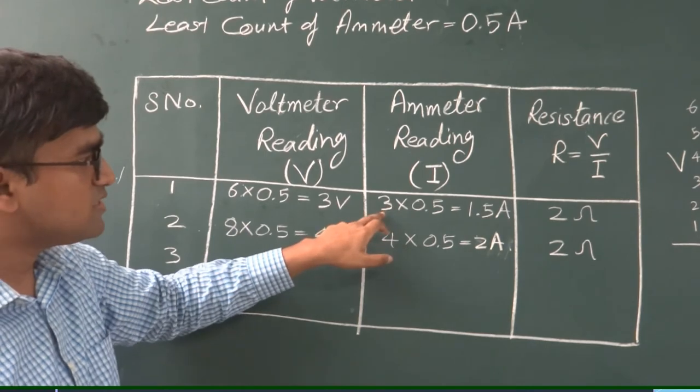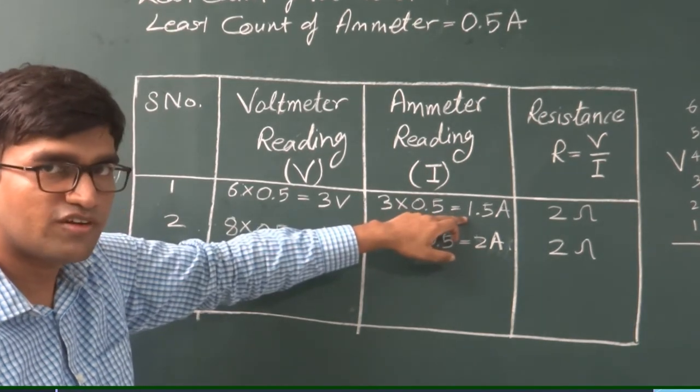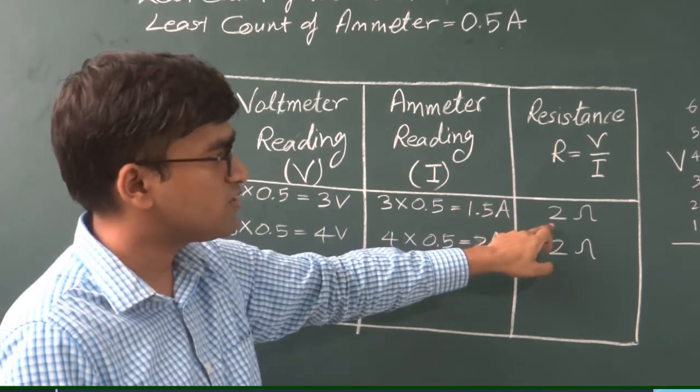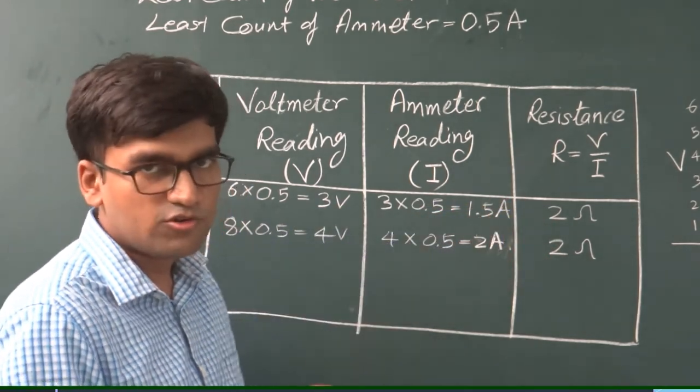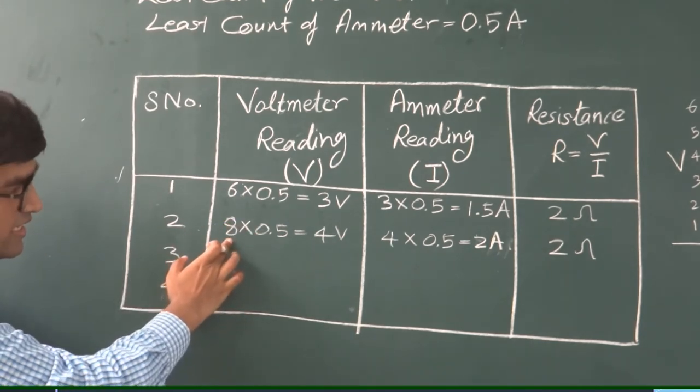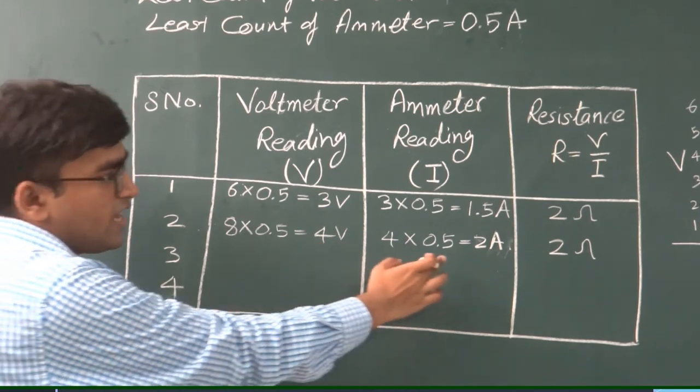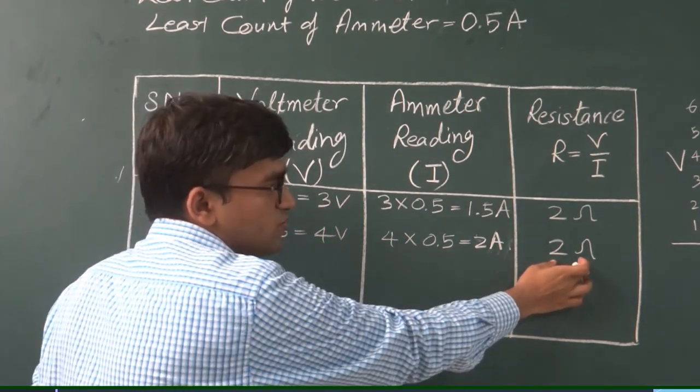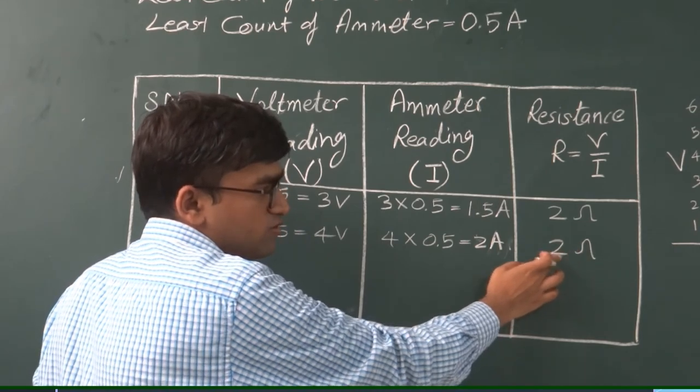Similarly there were three divisions on the ammeter. That gives you 1.5 amperes. From here you can calculate the resistance for the individual reading, that is coming out to be 2 ohms. Similarly for the second set of readings we have taken eight divisions, that gives you 4 volts. And corresponding current was 2 amperes. So from here also we are getting the resistance as same value, that is 2 ohms.